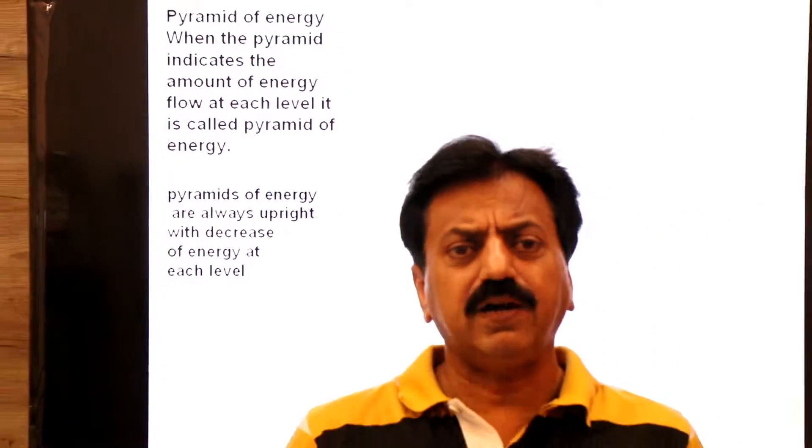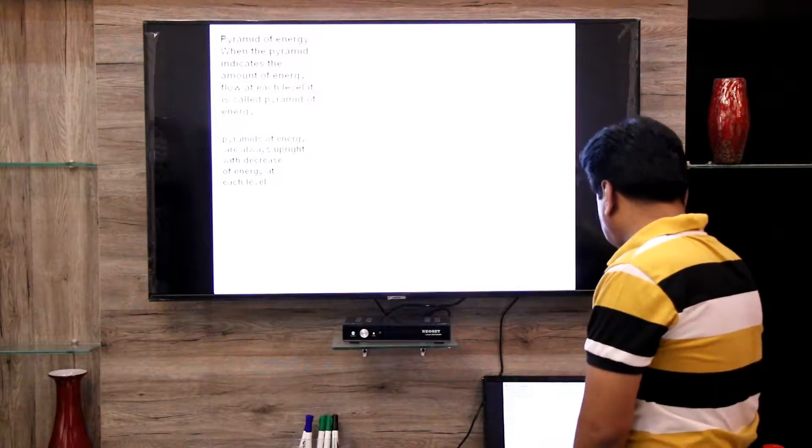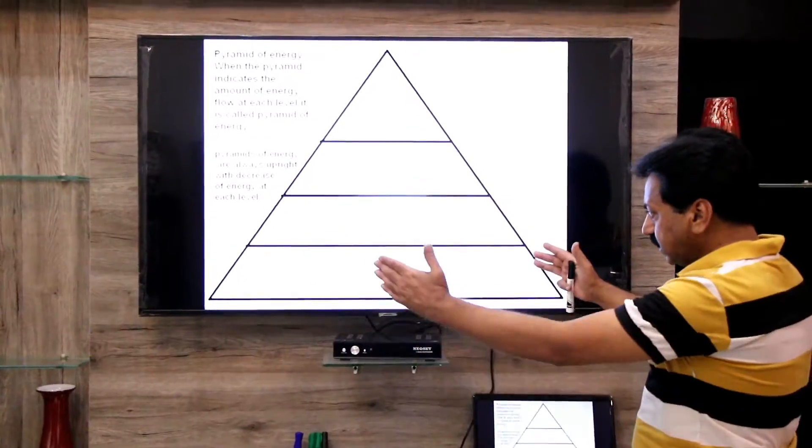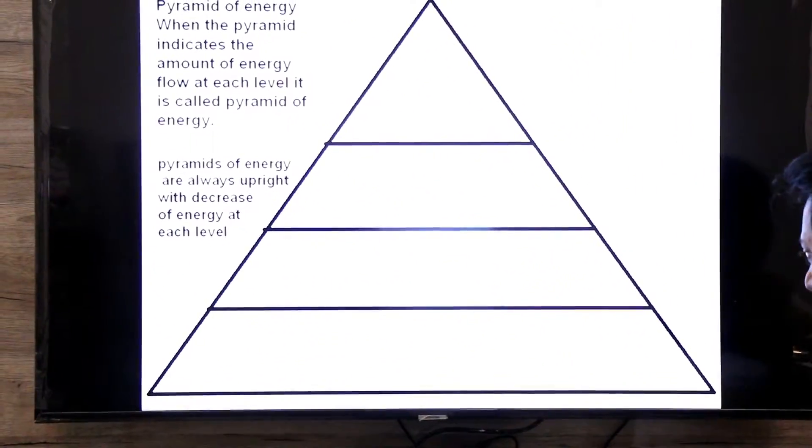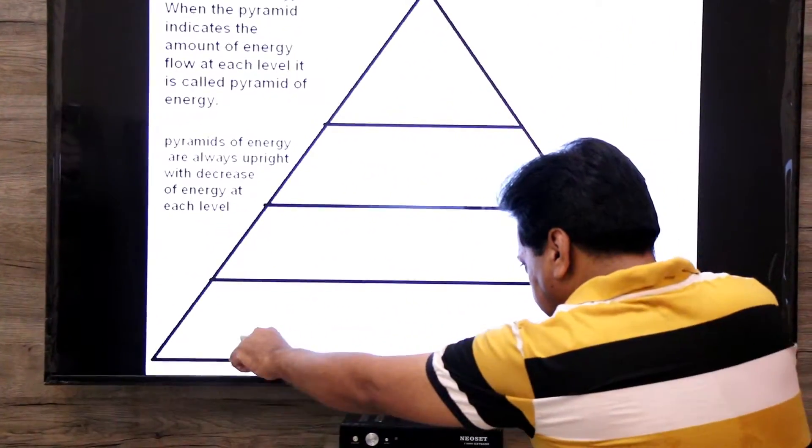The pyramid of energy always goes from base to apex. As we have studied, according to the second law of thermodynamics, there is a decrease of energy at each level with the release of heat. As we go higher up the pyramid, the energy decreases at every level.